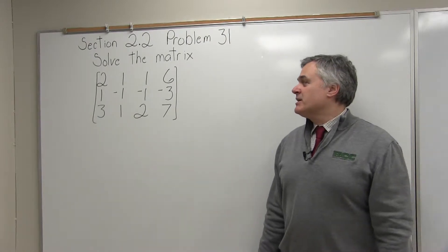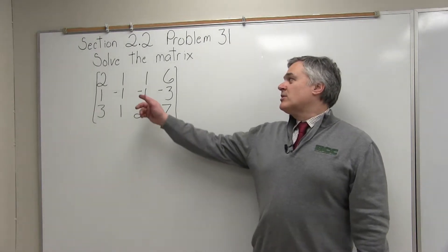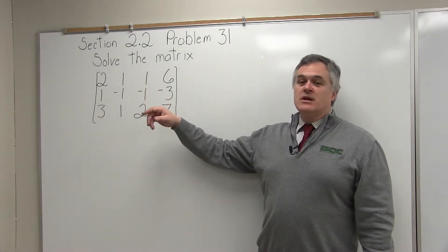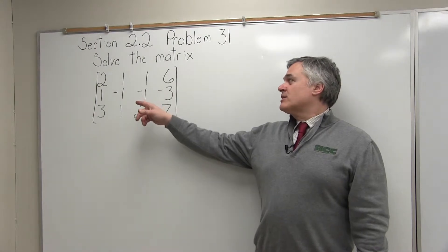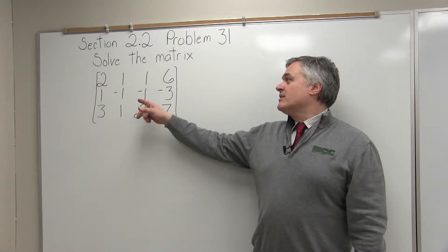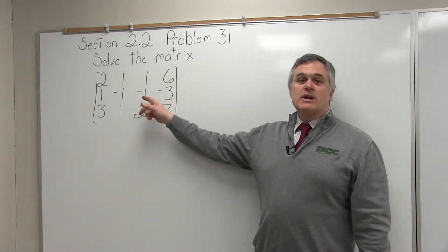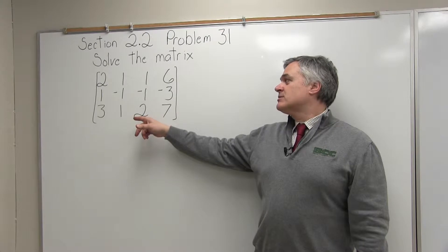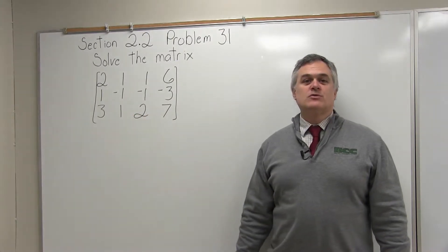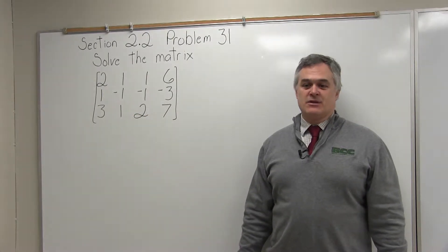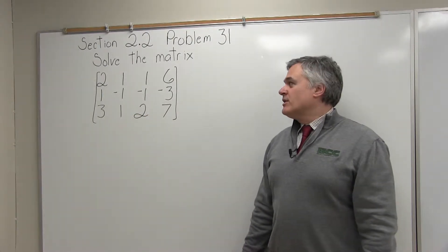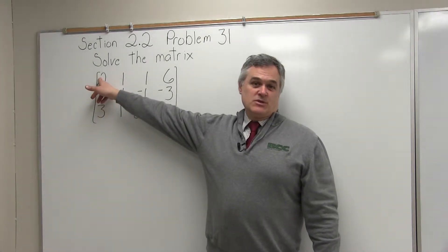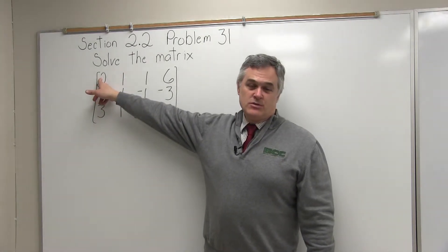It says, solve the matrix. We have a matrix with a top row of 2, 1, 1, 6; a second row of 1, negative 1, negative 1, negative 3; and the bottom row is 3, 1, 2, 7. So the very first step we have to do is get a 1 in the upper left-most position — right now it's a 2.